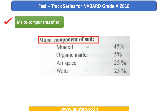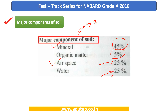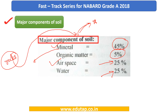Here are the major components of soil that you need to note for your examination. Mineral matter forms 45%, organic matter forms 5%, air space 25%, and water 25%. Soil is majorly constituted of mineral matter because the parent material of soil is rock — after weathering of rocks you get the soil component. Kindly memorize this chart.